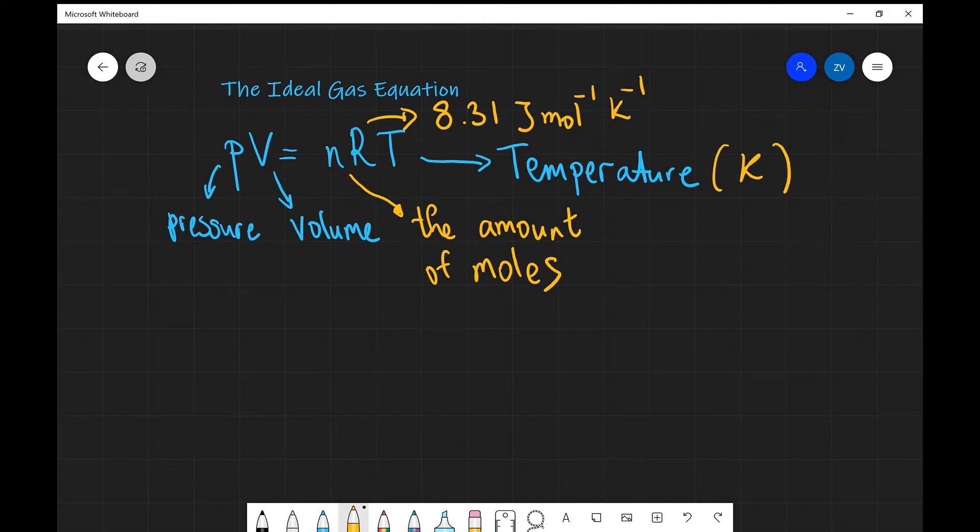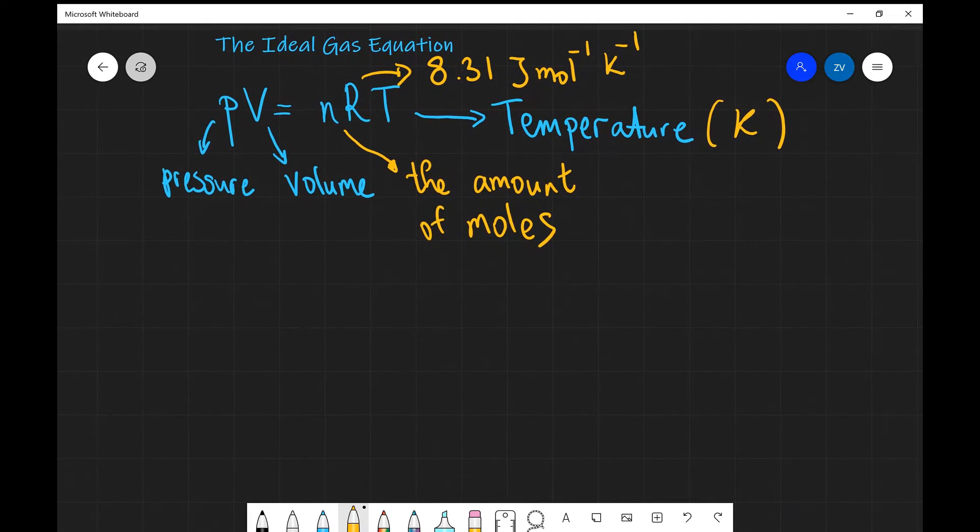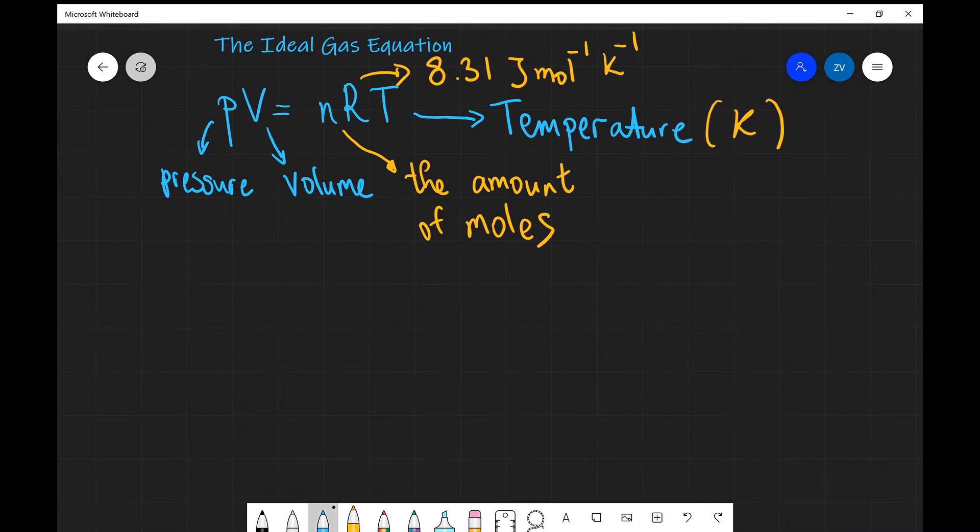So that's one form of the equation. There's a very similar form of exactly the same equation. PV is equal to capital N K T. P and V are exactly the same as above, so P stands for pressure and V stands for volume.